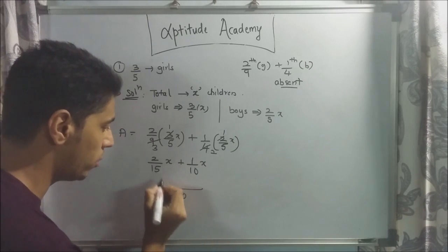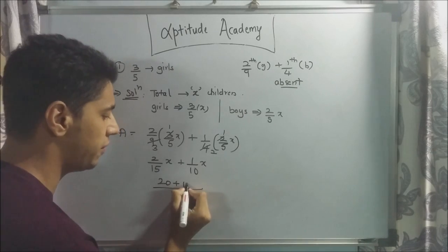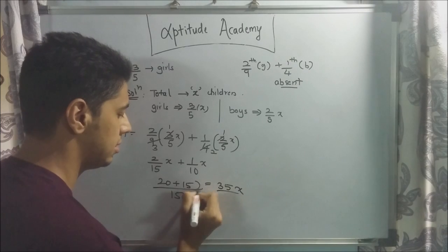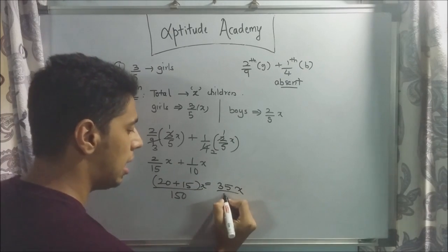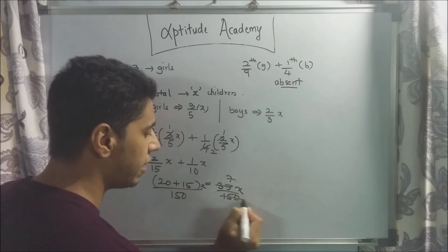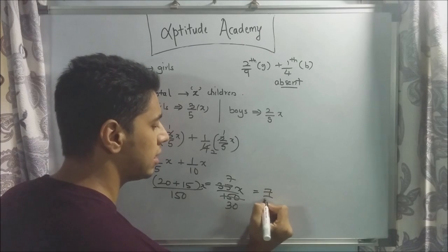Now I can just multiply 2 into 10. So 20 plus 15 is 35. So 35x upon 150. 5 times 7 and 5 times 30. So 7/30 x.